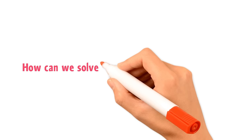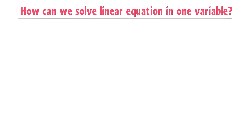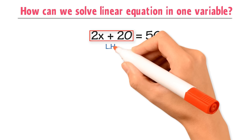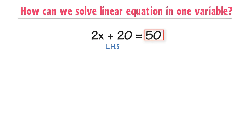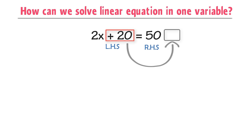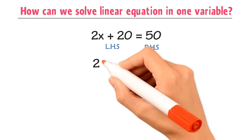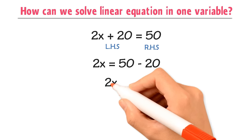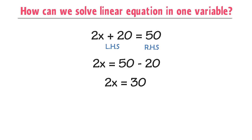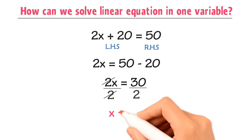Now let me teach you how we can solve a linear equation in one variable. For example, if a linear equation 2x plus 20 is equal to 50 is given and we are asked to find the value of x, remember that this side of the equality sign is the left-hand side, while this side is the right-hand side. Shifting plus 20 from the left-hand side to the right-hand side, the positive sign of 20 changes to negative. Hence, 2x is equal to 50 minus 20, or 2x is equal to 30. Now, dividing both sides by 2, we get x is equal to 15.